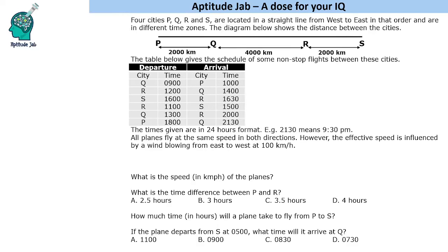Welcome to Aptitude. The problem states there are four cities located in a straight line from west to east. They are in different time zones, so this is a time-zone-based question. The diagram shows distances between the cities: 2000 km, 4000 km, and 2000 km. A table gives the schedule of non-stop flights between these cities: Q to P, R to Q, S to R, R to S, Q to R, and P to Q.